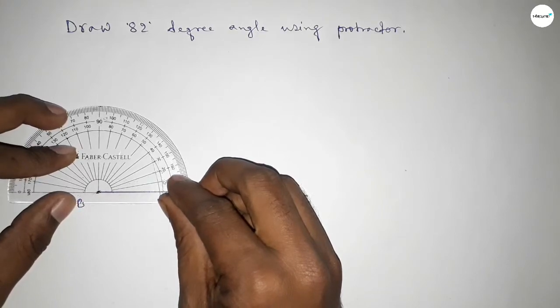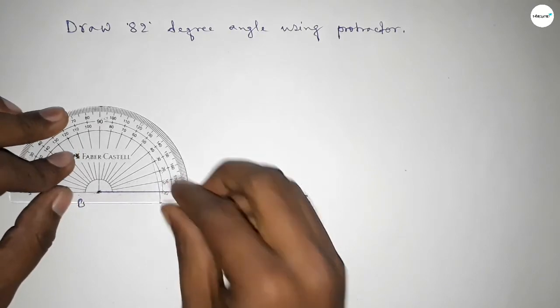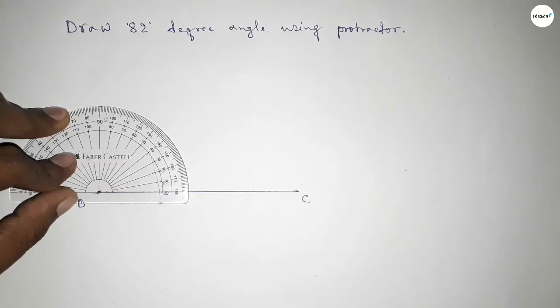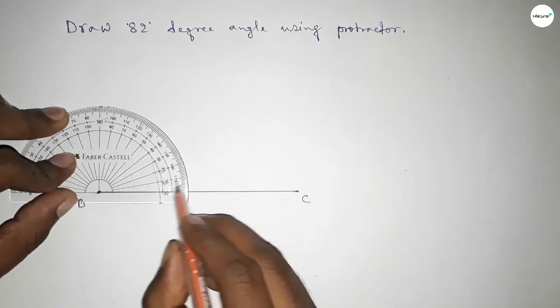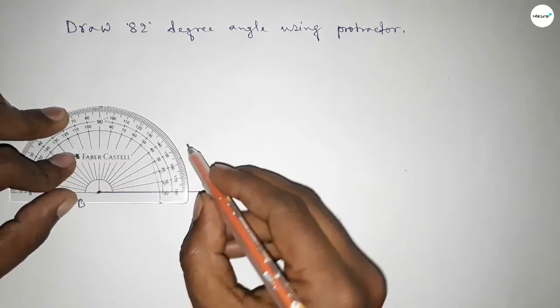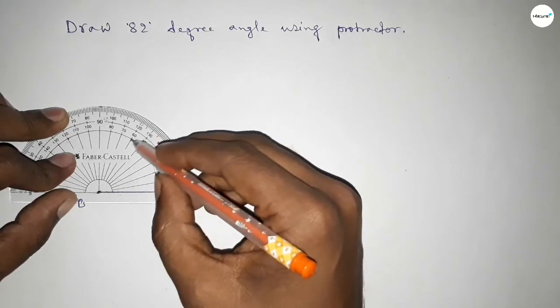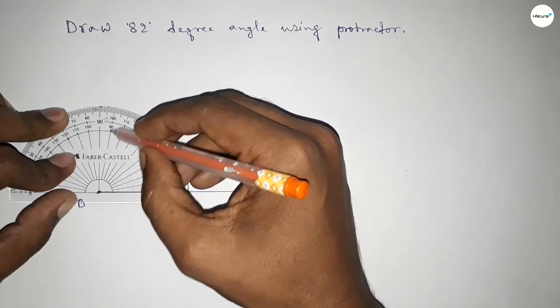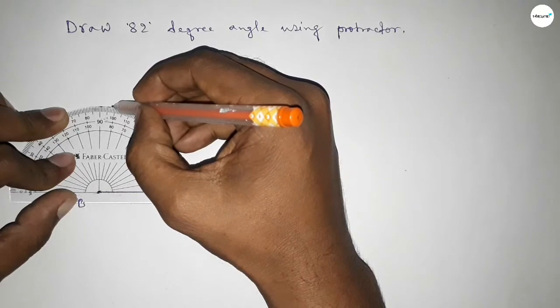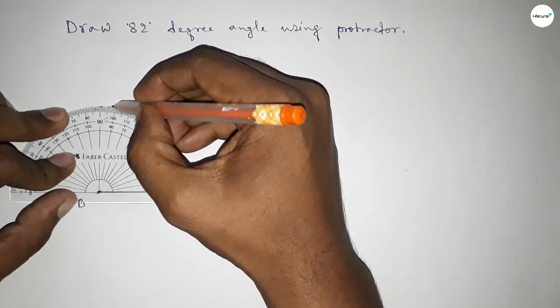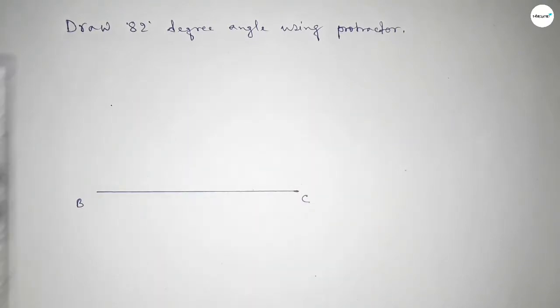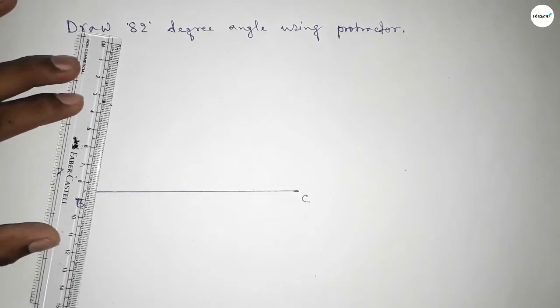Then counting the angles. So this is starting angle: 0, 10, 20, 30, 40, 50, 60, 70, and this is 80, 81, 82. So this is 82 degrees. Now joining this side to get an 82 degree angle.